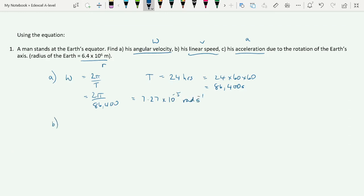Part B, we know that V is equal to R omega, so we can say 6.4 times 10 to the 6, times our 7.27 times 10 to the minus 5. And that will give you 465 meters per second.